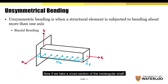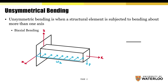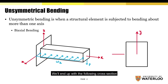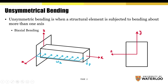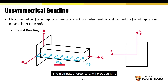Now if you take a cross section of the rectangular shaft and apply the corresponding principal axes, we'll end up with the following cross section. The distributed force wz will produce My, and the vertical load P will produce Mz.